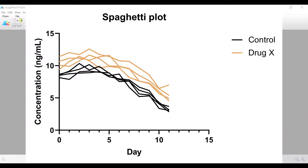The first is where each subject or replicate within the same experimental group is coloured the same. In this example there are two experimental groups, control and drug X, and each group is coloured separately. This is useful to show all of the subject or replicate data for different experimental groups on the same graph.